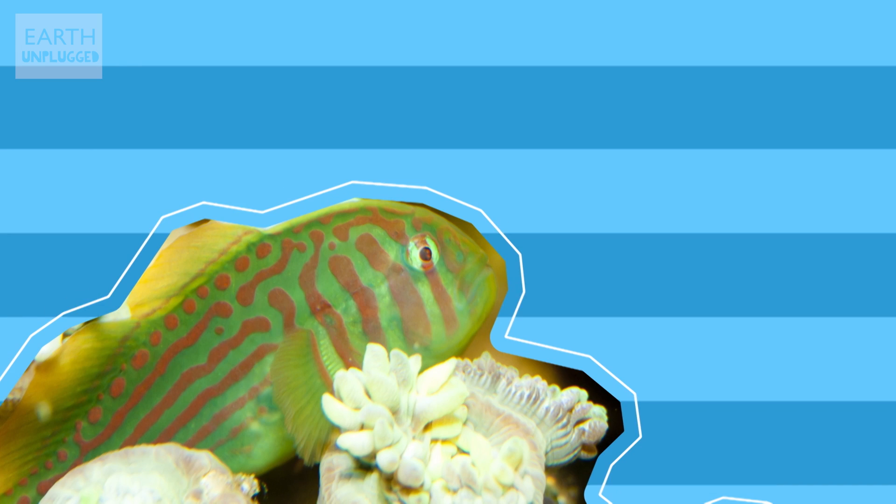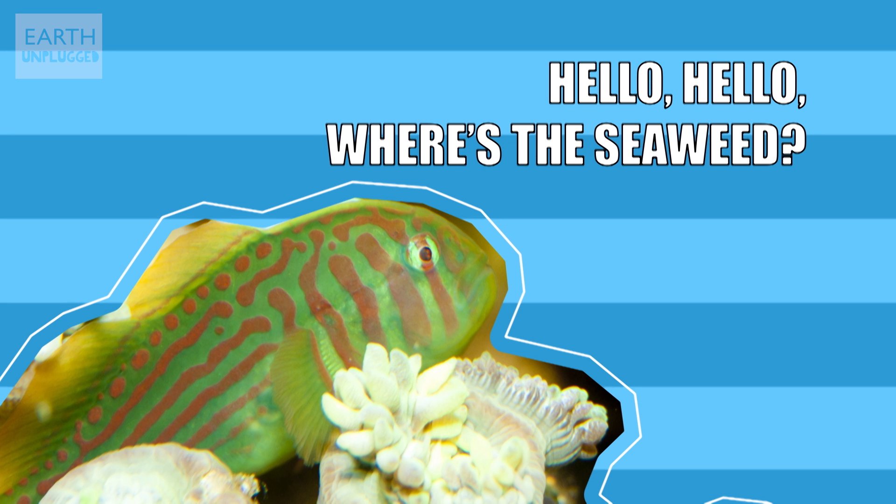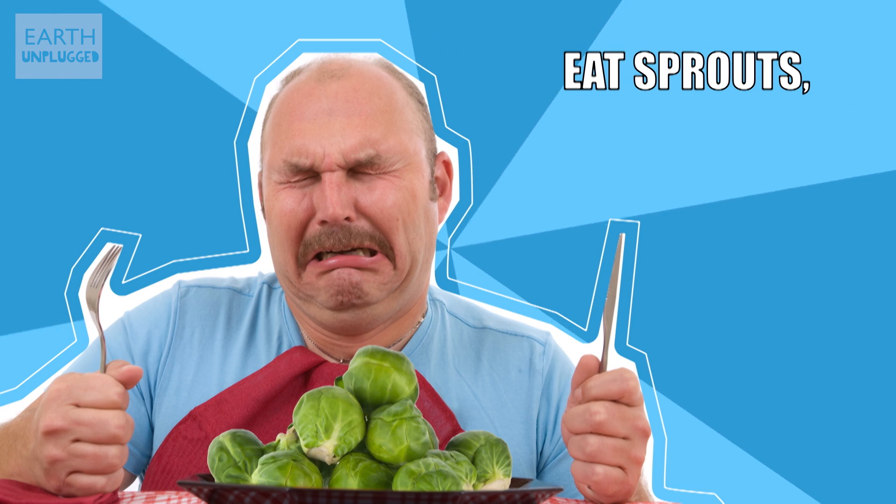And while other fish might simply up sticks and move, green clown gobies turn community police officers, eating the algae away before it can cover the coral. Researchers noted that not only did the gobies' swift response to the chemical cry save the coral and intern their homes, but the gobies also benefit by becoming more toxic to predators. So, the next time you're presented with some unappealing greens, spare a thought for those toxic algae-eating gobies.